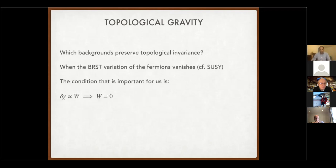To preserve topological invariance — analogous to asking which backgrounds support supersymmetric theories — we find that the Weyl tensor vanishing is the condition for topological invariance. So the theory must be studied in conformally flat backgrounds. This by itself does not give spatial flatness for early universe cosmology, but it gives conformal flatness as input. With additional assumptions perhaps spatial flatness can come out, though it doesn't naturally arise from this condition alone.